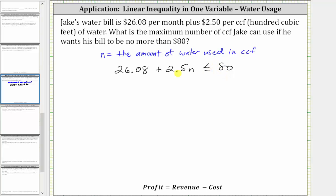The first step is to isolate the variable term by adding or subtracting. We can undo positive 26.08 by subtracting 26.08 on both sides. Simplifying, 26.08 minus 26.08 is zero.